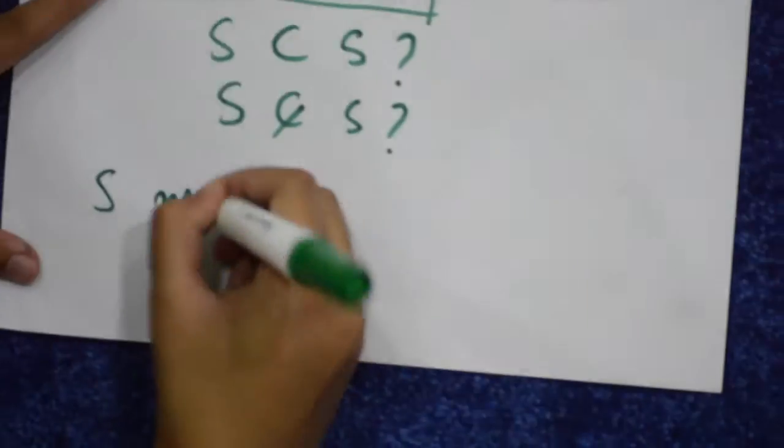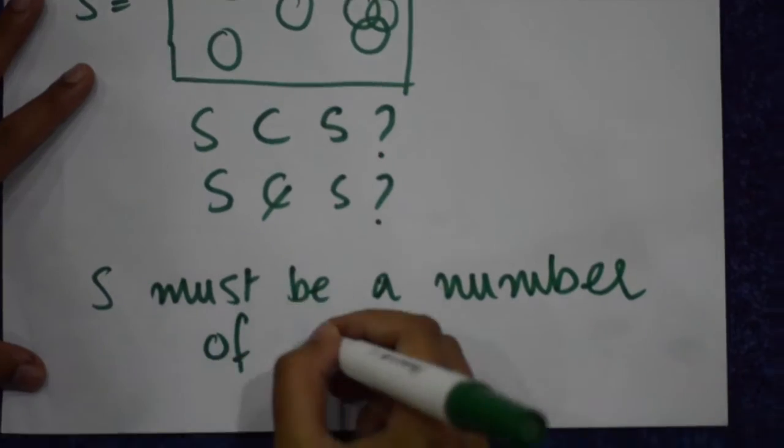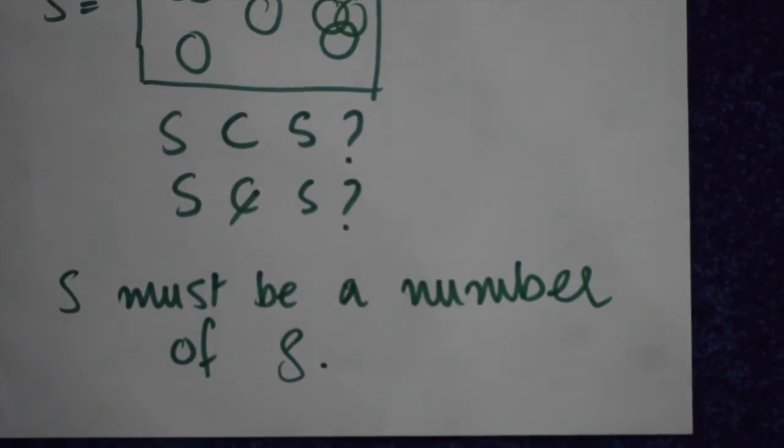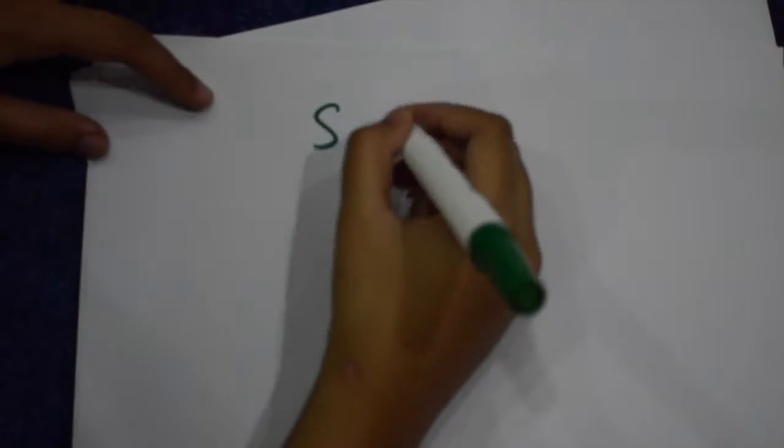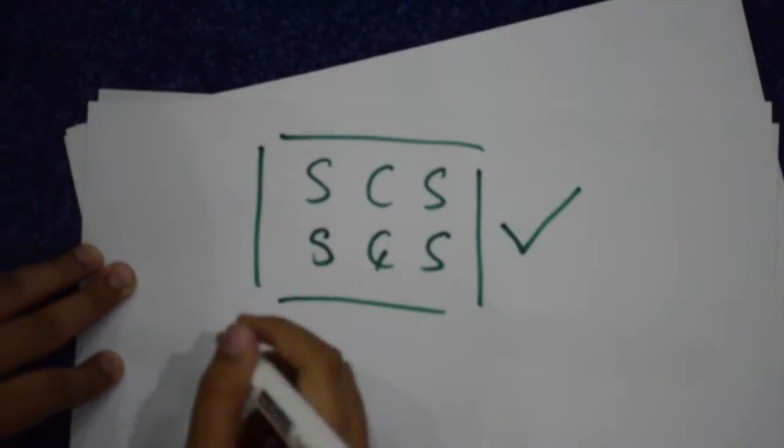But if S is not a member of S, then it is a set that does not contain itself. So, it must be a member of S. And this means that S must be in S and also in the complement of S.